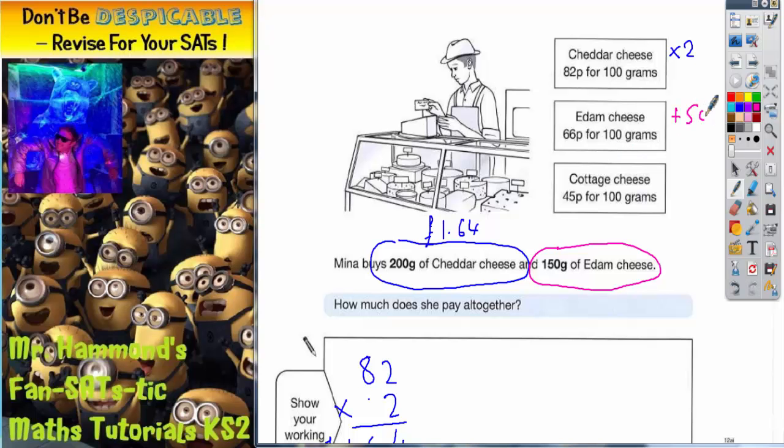You'll notice that 50 grams is half the weight of 100 grams. So if it's half the weight, it's going to be half the price. And half of 66 pence is 33 pence.